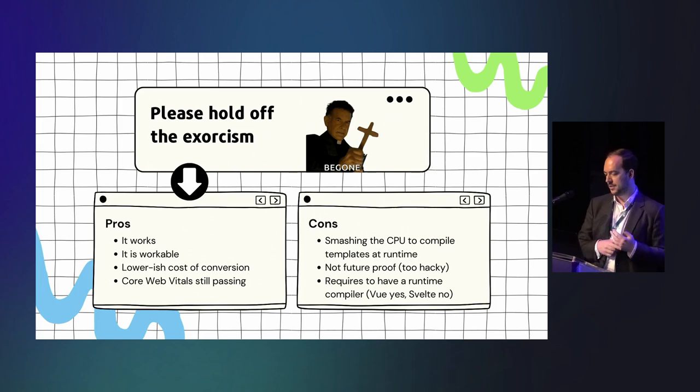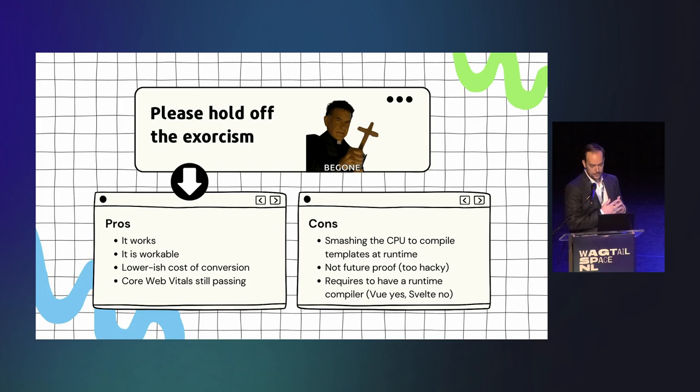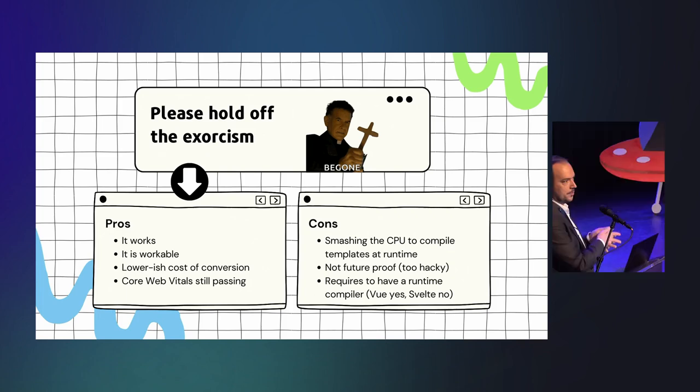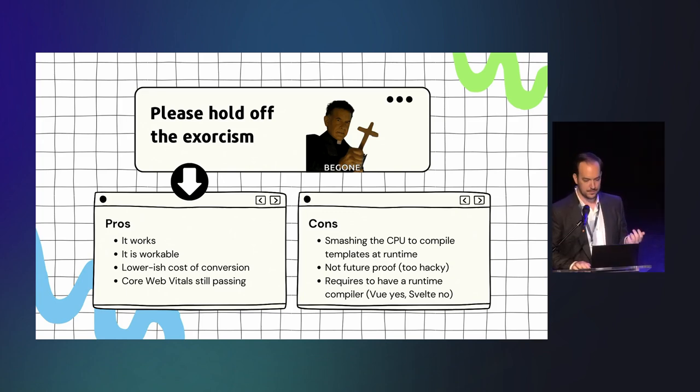Cons, though, is that it's really getting hard on the CPU, because you need to compile all those templates at load time. So, that's kind of annoying. It's not extremely future-proof either, because it's kind of hacky, you know, so it's really on the edge. And, the last thing is that you need a runtime compiler. So, typically, for Vue, it works, but for Svelte or React, I guess, not. Because they are compiled at compile time. And Vue is initially parsing HTML itself. So, that's a way to go, but that's not the definitive way to go, I would say.